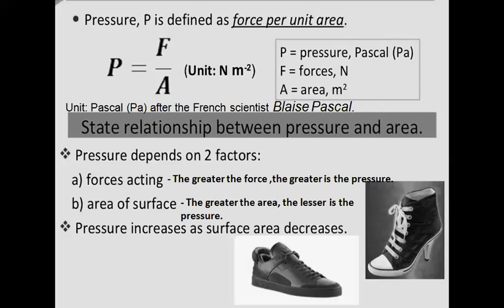Pressure is the force acting on a unit area of a surface. It can be calculated with the formula P = F divided by A, where P is the pressure, F is the force, and A is the area on which it acts. The SI unit of pressure is Pascal, denoted as Pa, named after the French scientist Blaise Pascal.